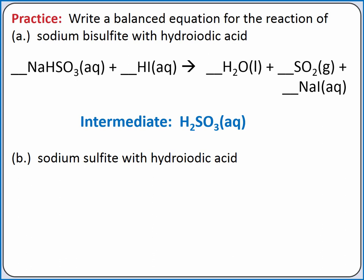To balance this reaction, the acid is donating an H-plus to the bisulfite ion to produce sulfurous acid. Bisulfite only needs one H-plus, so we only need one hydroiodic acid. All of our coefficients are ones, so this reaction is already balanced.